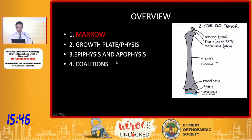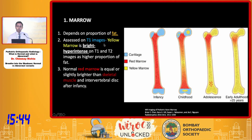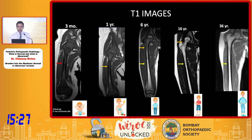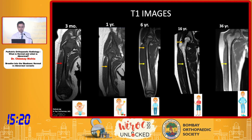Coming to marrow, it depends mainly on the proportion of fat how it would appear on MRI. It is assessed mainly on T1 images. Yellow marrow is bright, that is hyperintense on T1, because it has more fat. Normal red marrow is usually equal or slightly brighter than the skeletal muscle. Let's look at how marrow grows from red marrow into yellow marrow on T1 images.